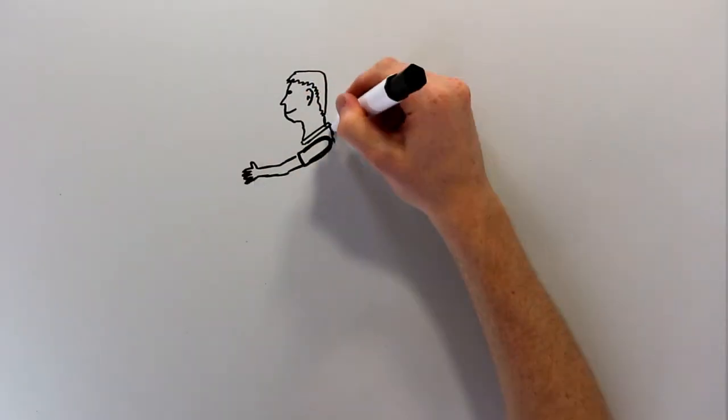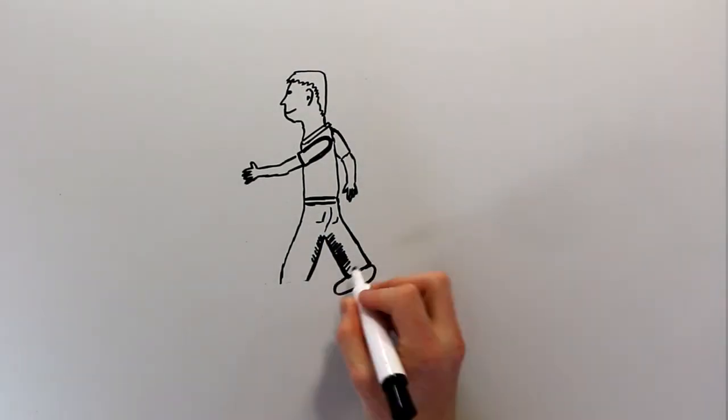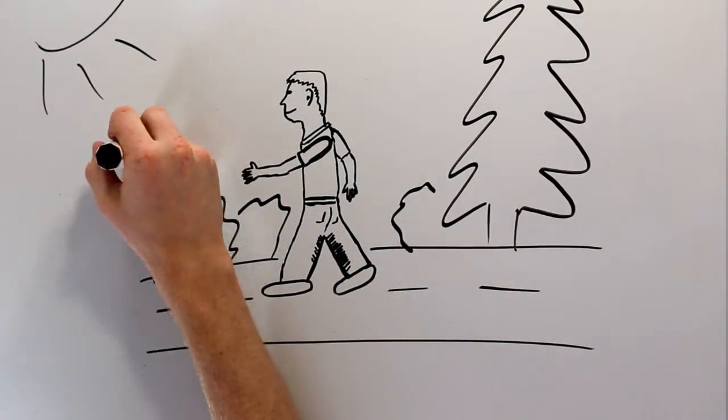Now, what do most people do when something hurts them? They stop doing it. Although this may seem logical, when you stop doing an activity, your body becomes unadapted or untrained to do it.